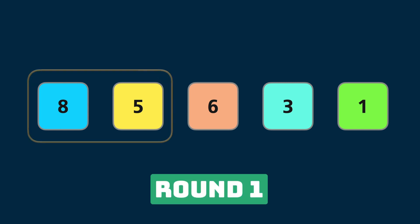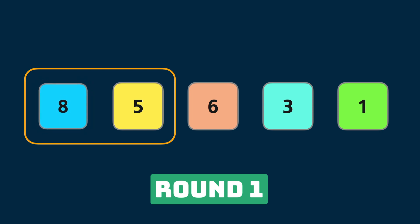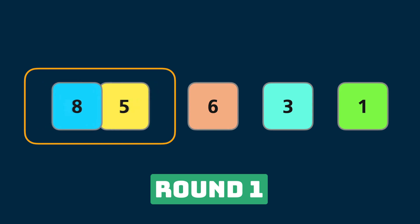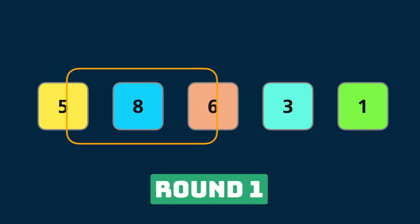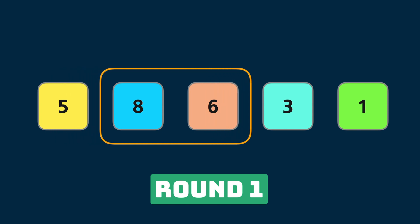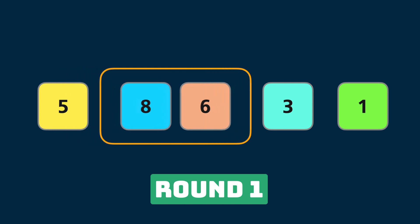On the first round we compare the first two elements. The first one is greater than the second one, that's why they are swapped. Then we move to the second pair of elements — again the first one is greater than the second one. We swap them again.